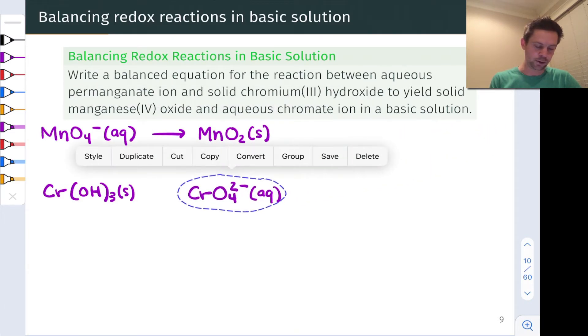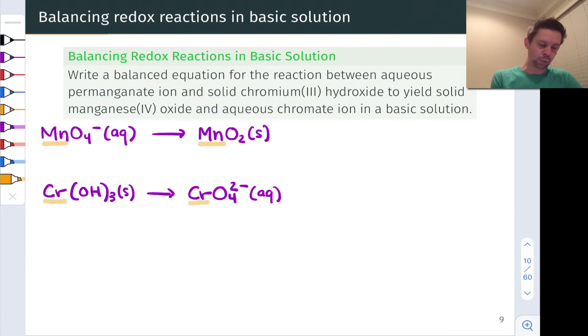So here we go. And at this point we want to make sure that we're balanced on all atoms that are not hydrogen or oxygen. And here, in fact, we are. We have one manganese, one manganese, good to go there, and one chromium and one chromium. So we're all balanced up on atoms that are not hydrogen or oxygen.